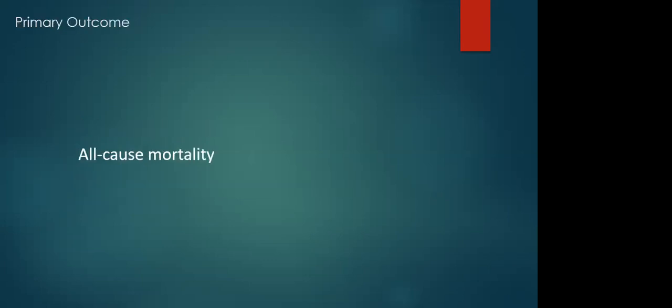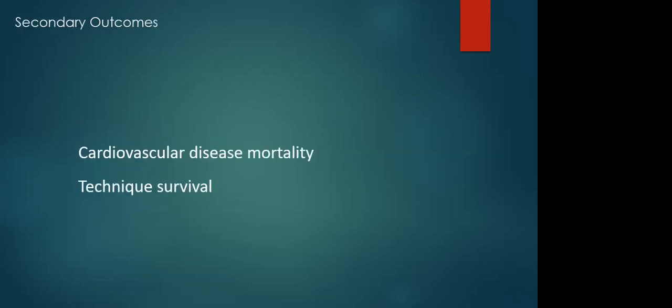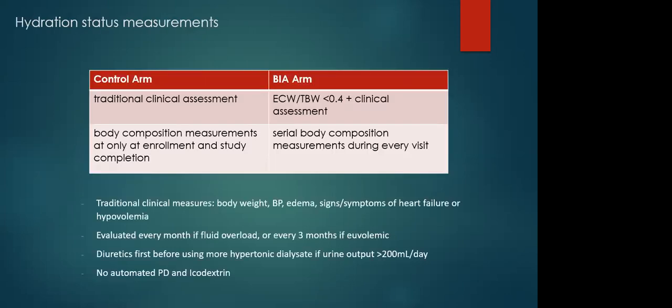Participants were randomly assigned in a one-to-one ratio to the BIA group, which is fluid management guided by bioimpedance plus traditional clinical methods, or the control group. Simple randomization was performed without using any stratification, and physicians and investigators were not blinded to randomization. The primary endpoint was all-cause mortality. The secondary endpoints were cardiovascular disease mortality and technique survival. CVD included ischemic heart disease, stroke, and peripheral artery disease. Technique failure was defined as a situation where a patient switched from PD to HD for greater than three months.